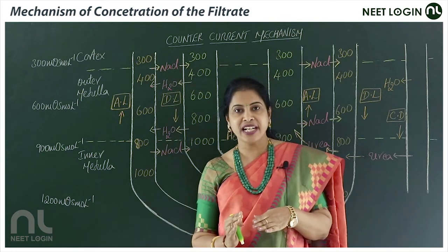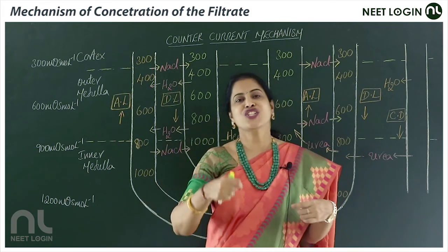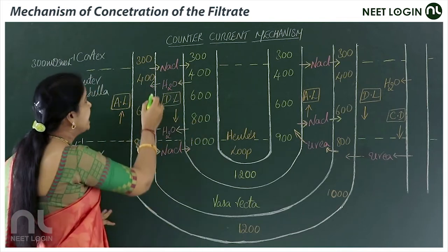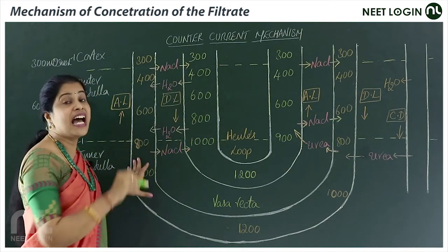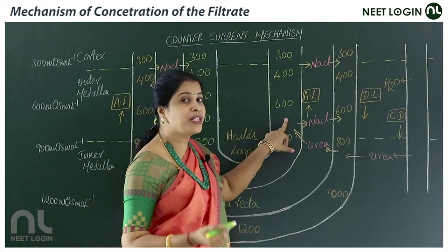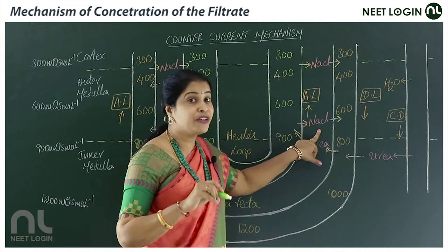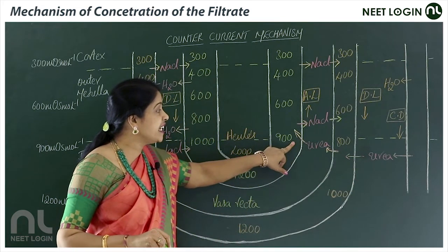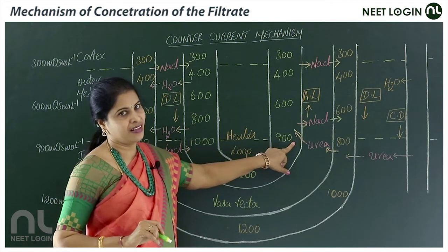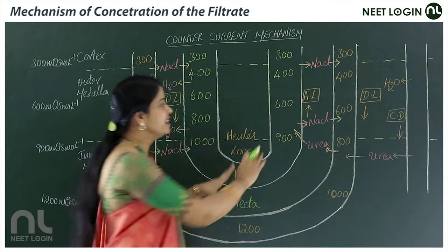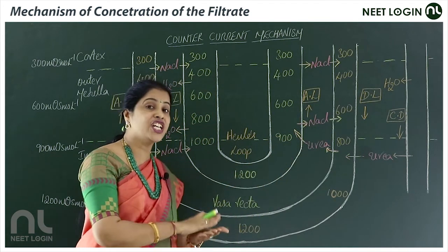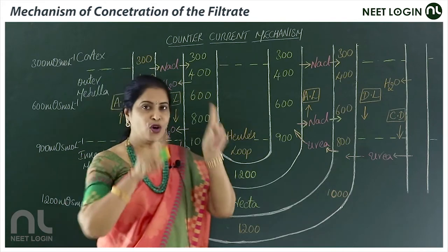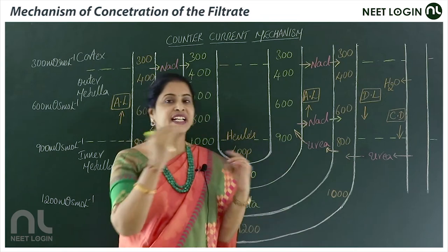Not only is the flow in counter action, but the exchange is also counter. Whatever water is absorbed from the descending limb of the loop of Henle enters the vasa recta's ascending limb. The ascending limb is permeable to electrolytes but impermeable to water. Urea reabsorbed from the collecting duct is secreted into the thin segment of the ascending limb. Ions move out — counter exchange between the limbs of vasa recta and Henle's loop.